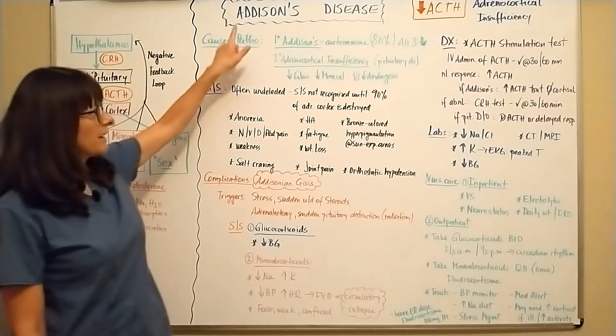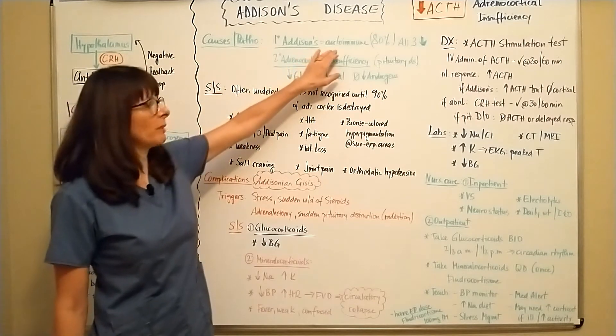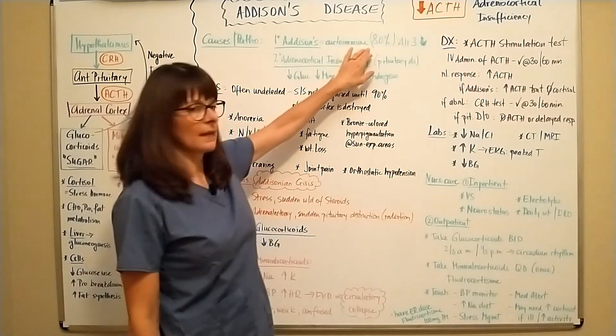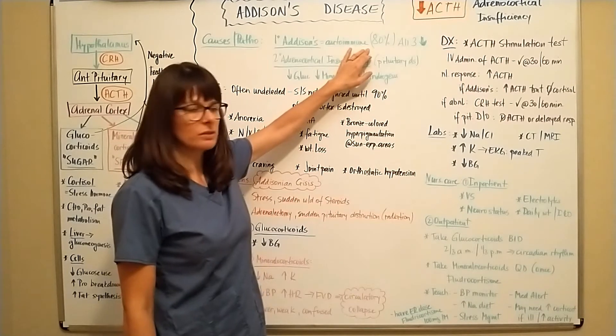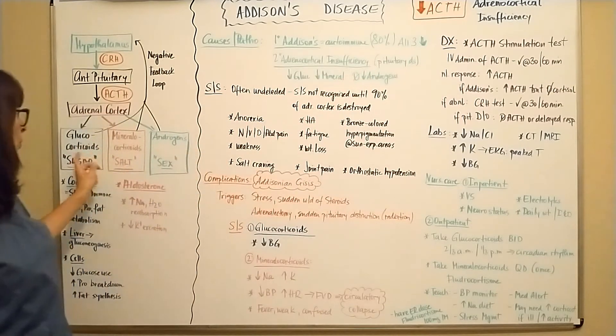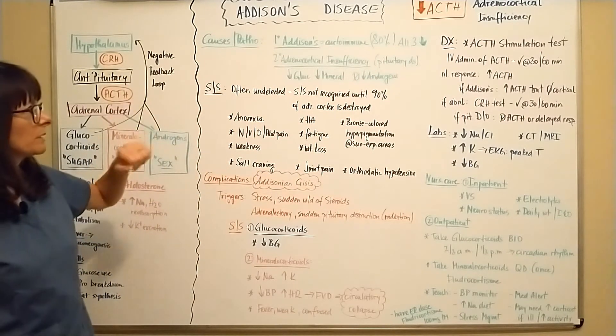So the causes of Addison's disease, primary Addison's disease is usually caused by autoimmune disorders and is 80% of the causes for Addison's disease. And in that case, all three of the glucocorticoids, mineralocorticoids, and androgens will be decreased.